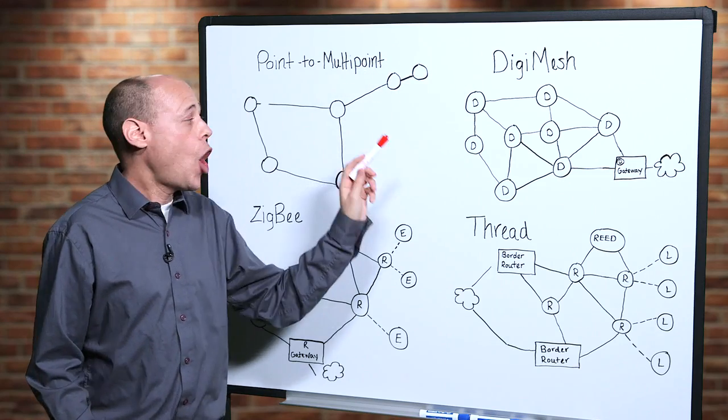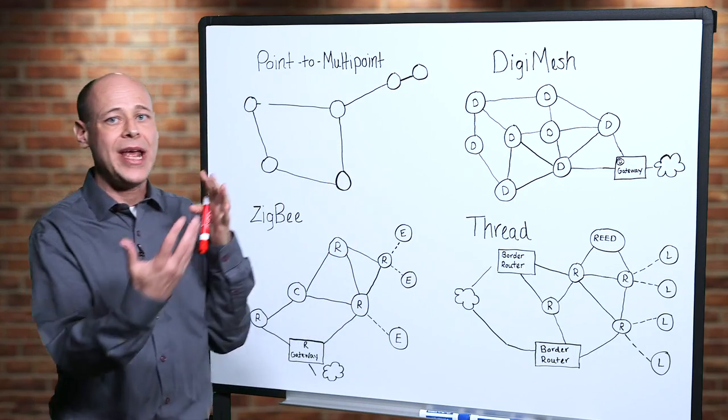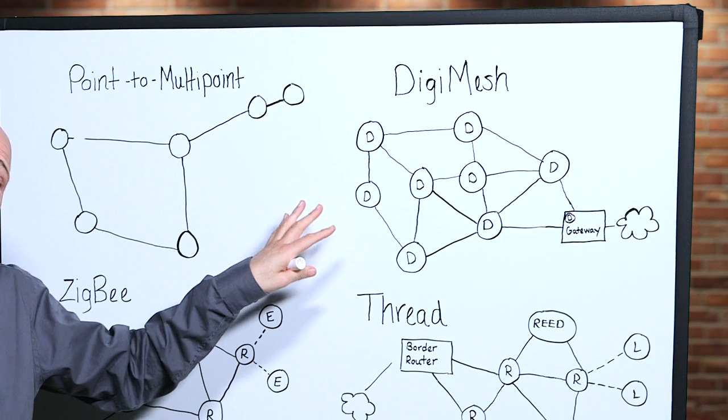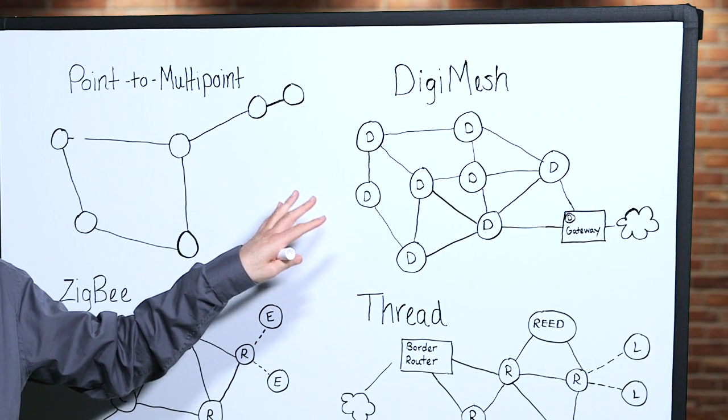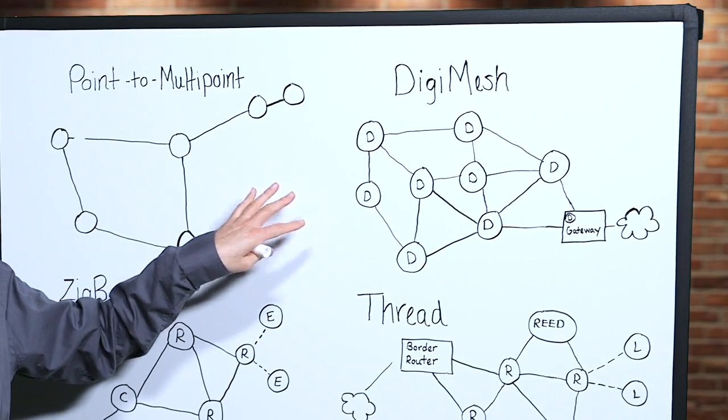In DigiMesh, all of the nodes in the network can route data. And in fact, the whole network can go to sleep and wake up together. So there are no parent-child relationships, and additional routers can be added to extend coverage extremely easily.